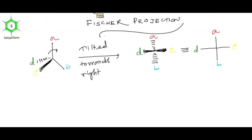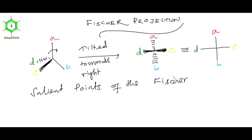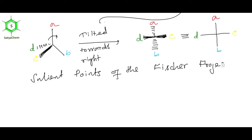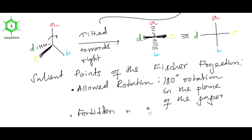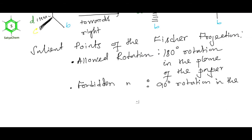Now we have to remember some important points while dealing with Fisher projection. The first point is about allowed changes: you can rotate a Fisher projection 180 degrees in the plane of the paper — that is allowed. The forbidden rotations are 90 degree rotation in the plane of the paper, and 180 degree rotation out of the plane of the paper.